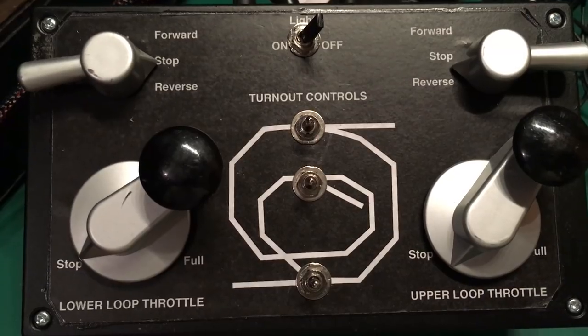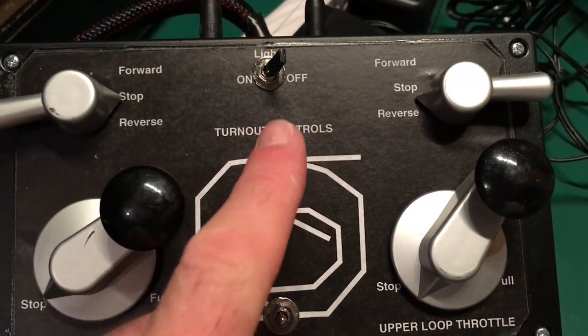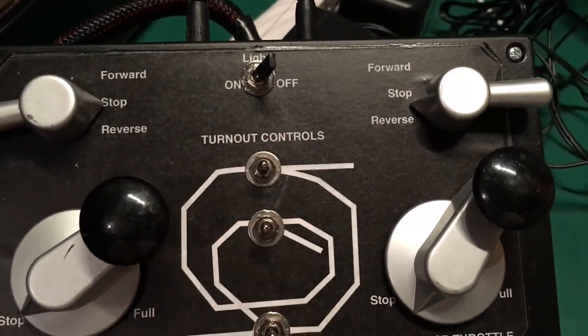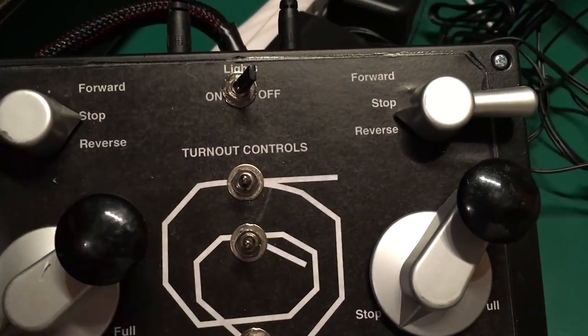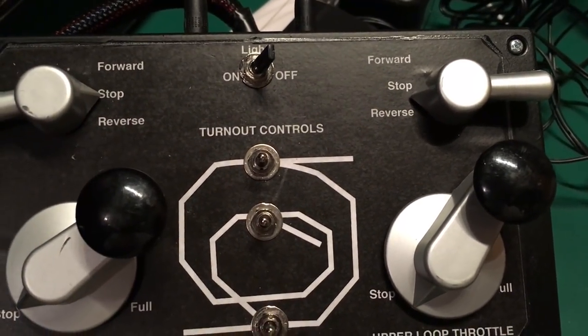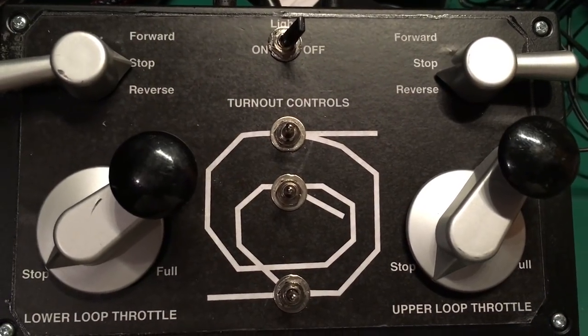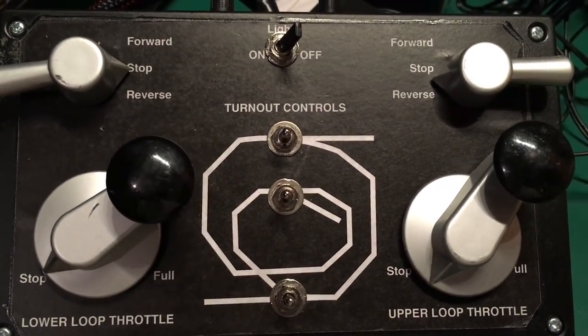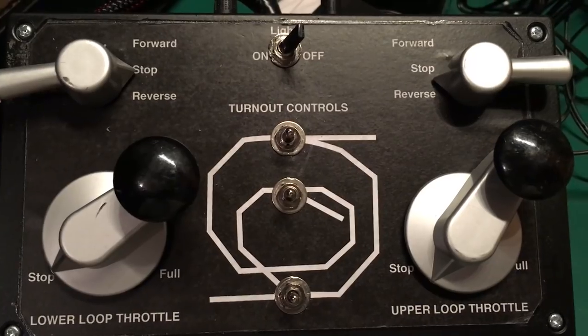In the process of taking everything apart and reassembling everything, I apparently messed up a wire on one of these toggles. I think it was this one up here. I just have to take this back apart again and re-solder a connection, but otherwise everything is working good after the disassembly and reassembly process.